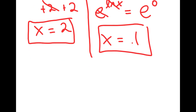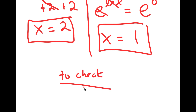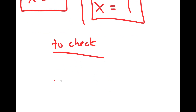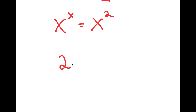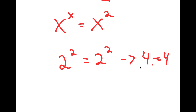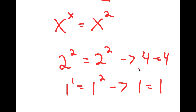To check, my equation is x to the power of x is equal to x to the power of 2. If I plug in 2, I get 2 to the power of 2 is equal to 2 to the power of 2, meaning 4 is equal to 4. If I plug in 1, I get 1 to the power of 1 is equal to 1 to the power of 2, meaning 1 is equal to 1. So both solutions are correct.